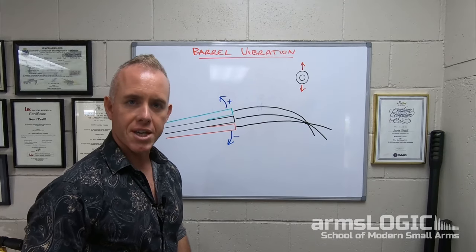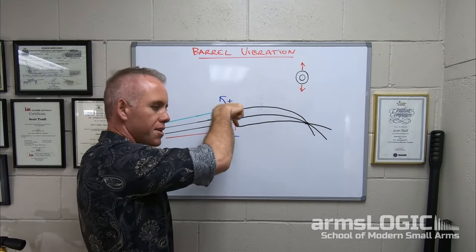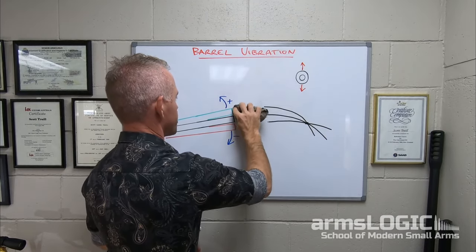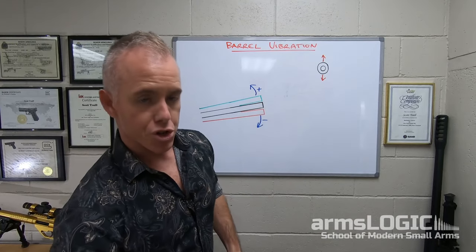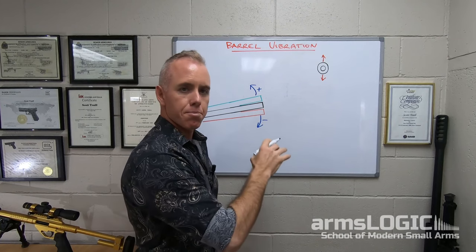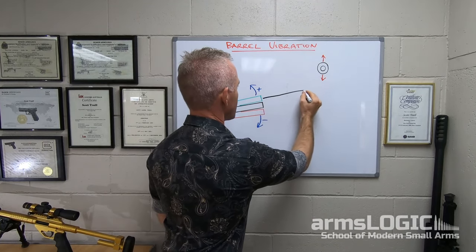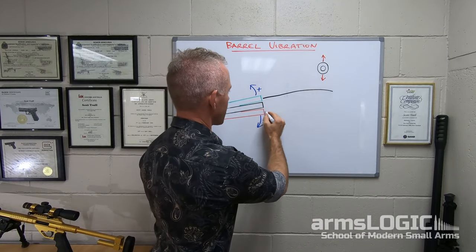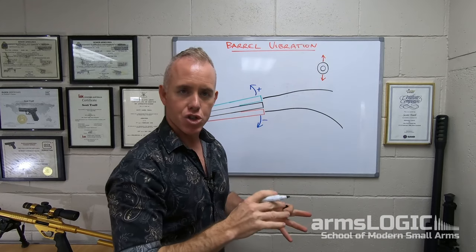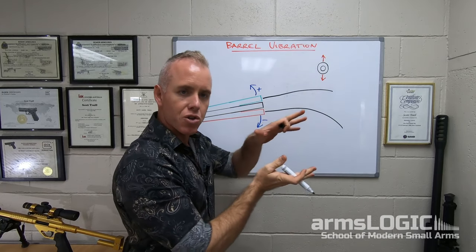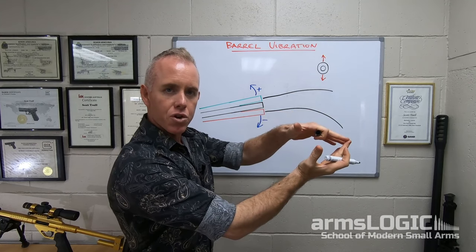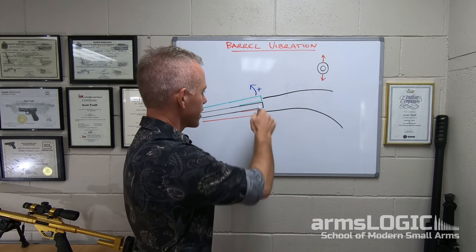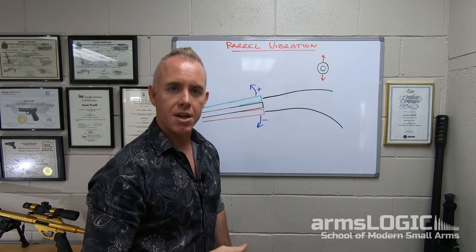Now what happens if the projectiles are exiting during negative vibration — the downwards travel of the muzzle? Well, the opposite occurs. The projectiles with a higher velocity exit before mid plane, and the projectiles with a lower velocity exit after mid plane, meaning that their trajectories tend to diverge rather than converge. You'll never have an accurate weapon if your projectiles are exiting during negative vibration, unless your velocities are near identical.